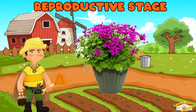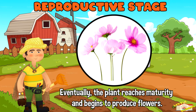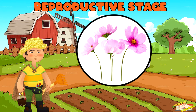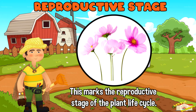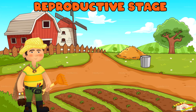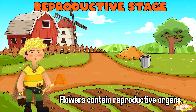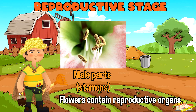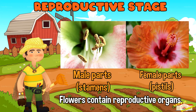Reproductive stage: eventually the plant reaches maturity and begins to produce flowers. This marks the reproductive stage of the plant life cycle. Flowers contain reproductive organs, including male parts called the stamens and female parts called the pistils.